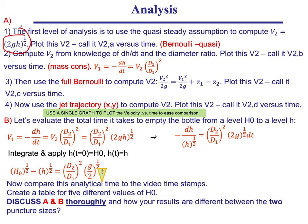Now we want to analyze the data using multiple approaches. First, use the quasi-steady Bernoulli assumption — assuming v1 ≈ 0 — to find v2 from the height h at each instant. Then compute v2 again using v1 from dh/dt and the diameter ratio through mass conservation. This gives us two different computed curves of v2 as a function of time to compare.